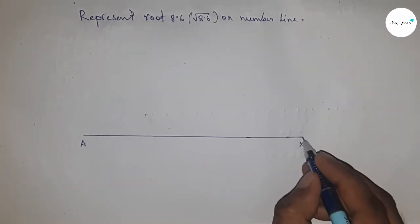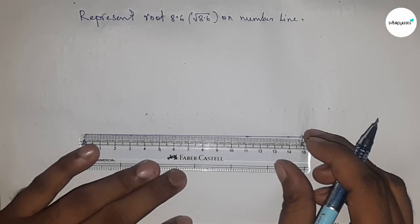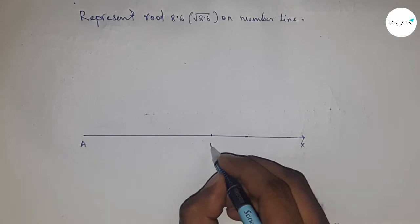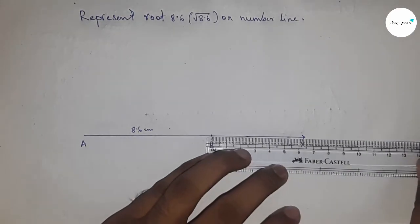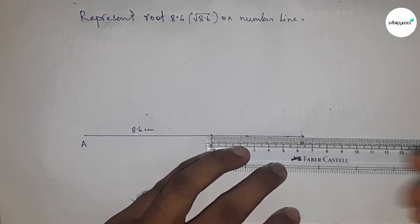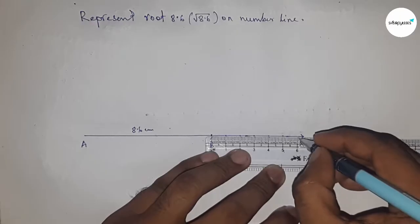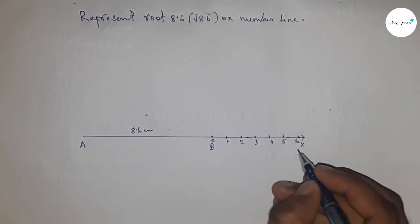Draw a line of any length, this is the AX line. Next, take a length of 8.6 centimeters using a scale. Mark this as point B, so AB equals 8.6 centimeters. Next, mark the numbers on the line from B to X using a scale: 0, 1, 2, 3, 4, 5, 6, and so on.